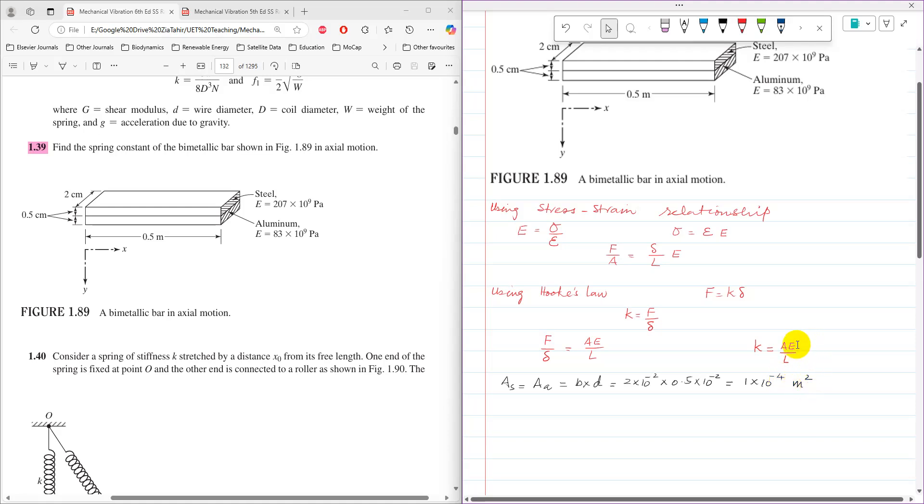The modulus of elasticity for steel is given as 207 times 10 to the power 9 Pa, and for aluminum it is 83 times 10 to the power 9 Pa.